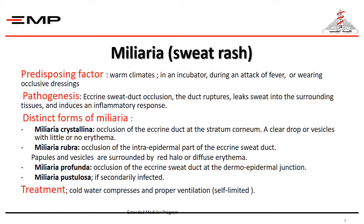Diseases of sweat glands — sweat rash, or miliaria. It occurs in warm climates, while warming in an incubator, during an attack of fever, or from wearing occlusive dressings or warm clothing. Eccrine sweat duct occlusion is the initial event. The duct ruptures and leaks sweat into the surrounding tissues, inducing an inflammatory response. According to the level of duct occlusion, we have distinct forms of miliaria.